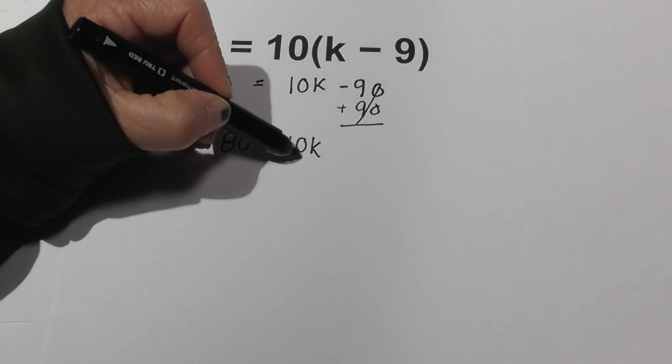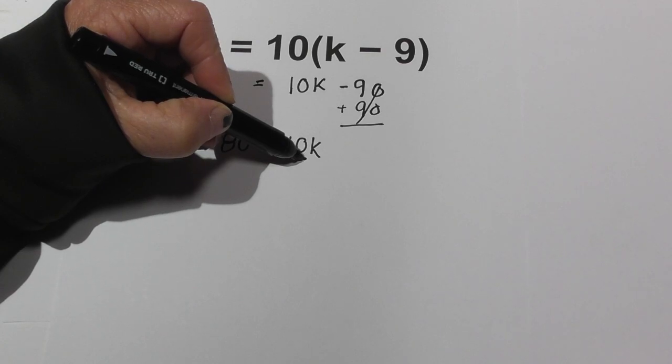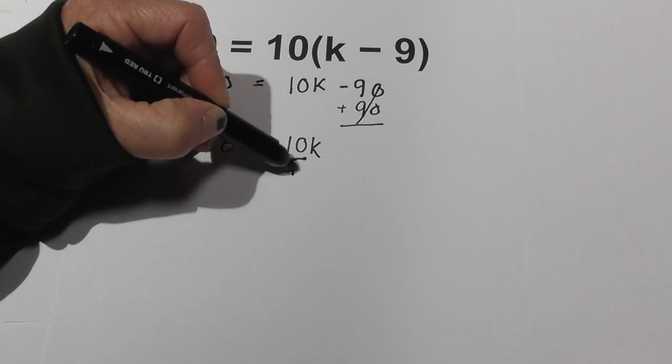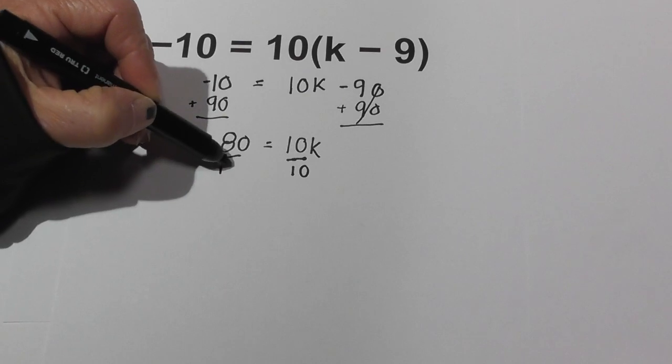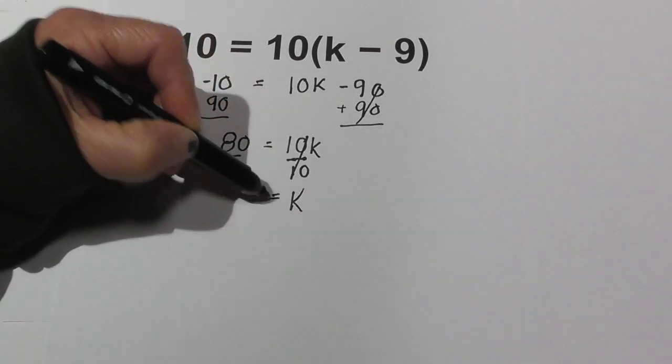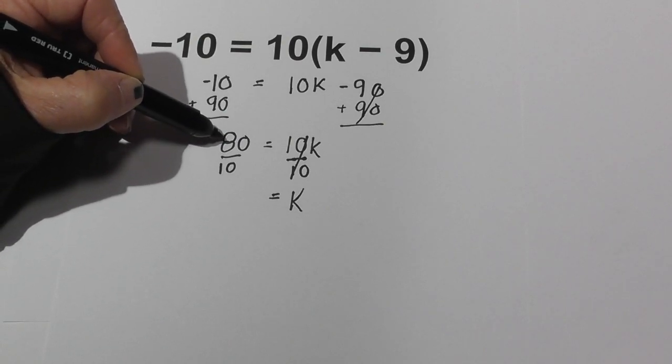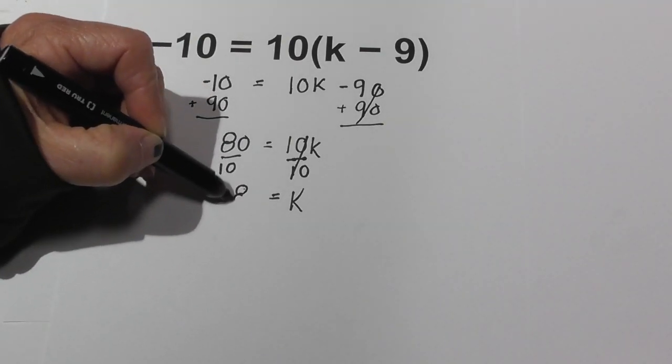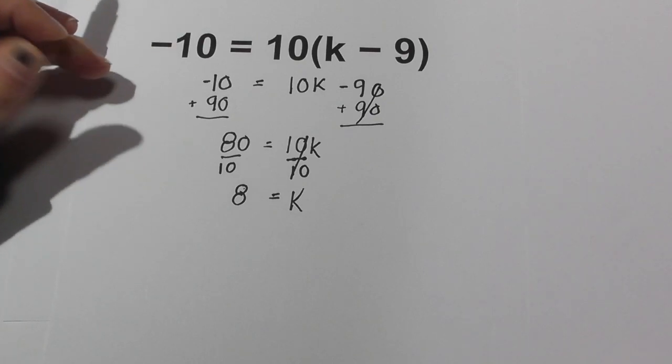Now this is multiplication, so I can get rid of it by completing an opposite operation, which is division. Divide each side by 10. These tens cancel, that equals k, and 80 divided by 10 is 8. So k is 8.